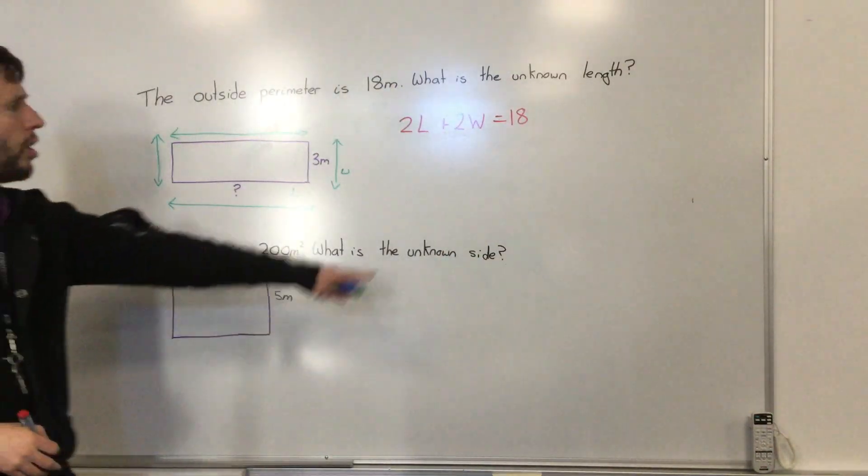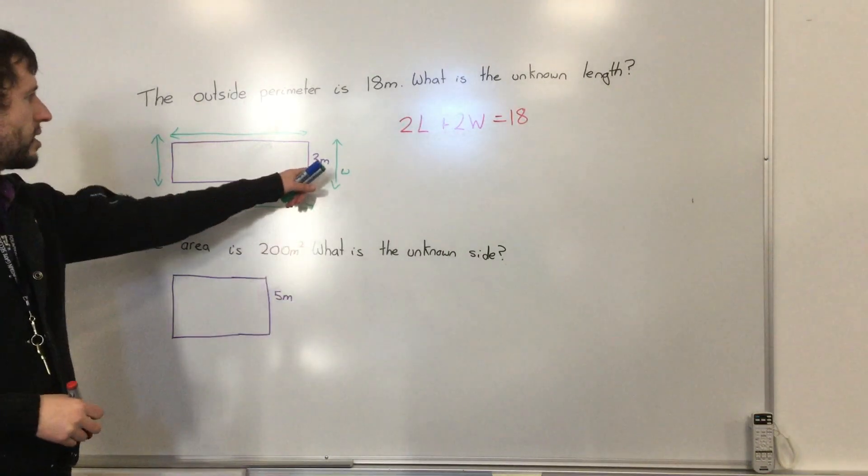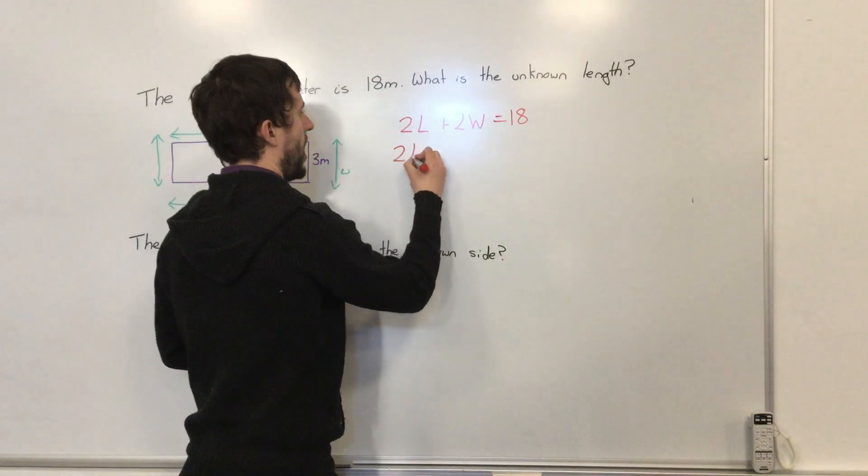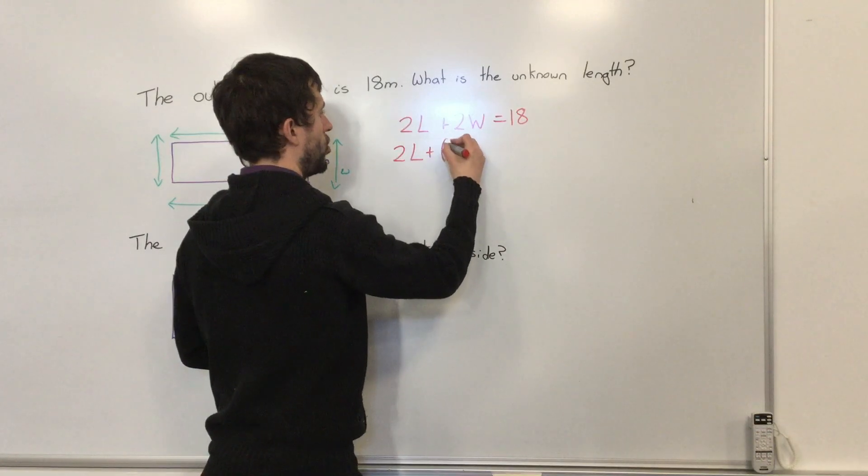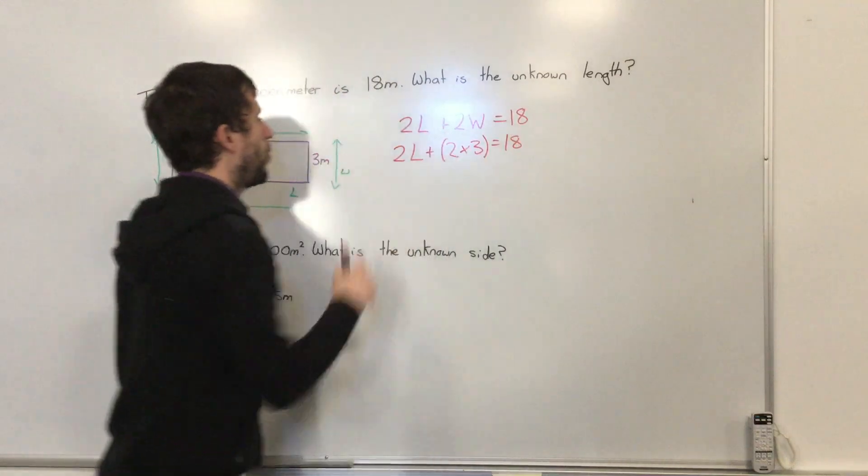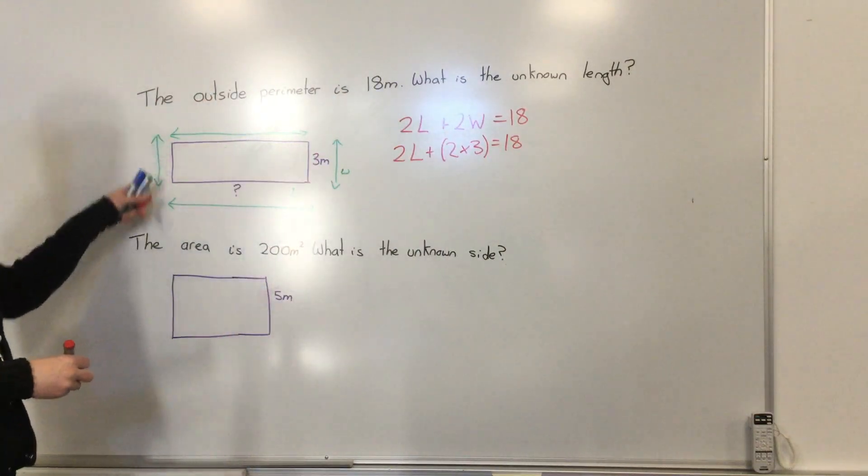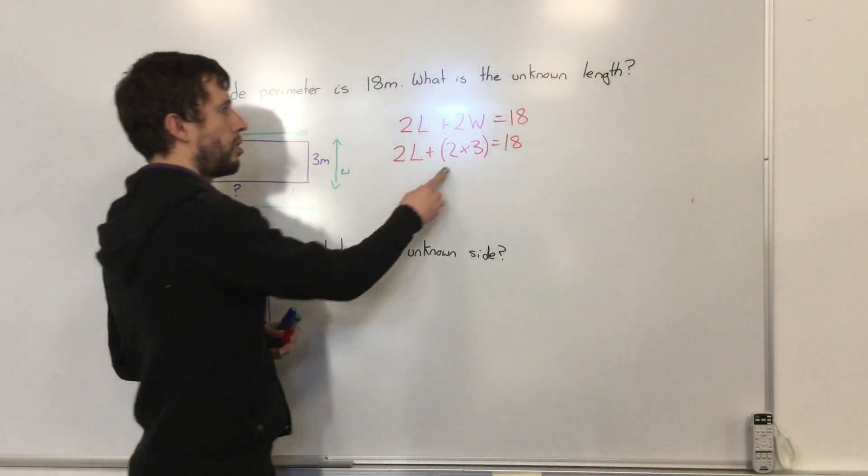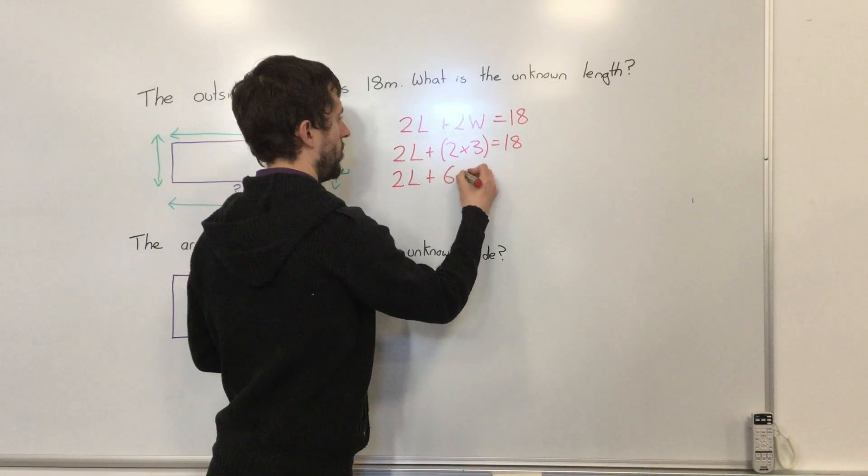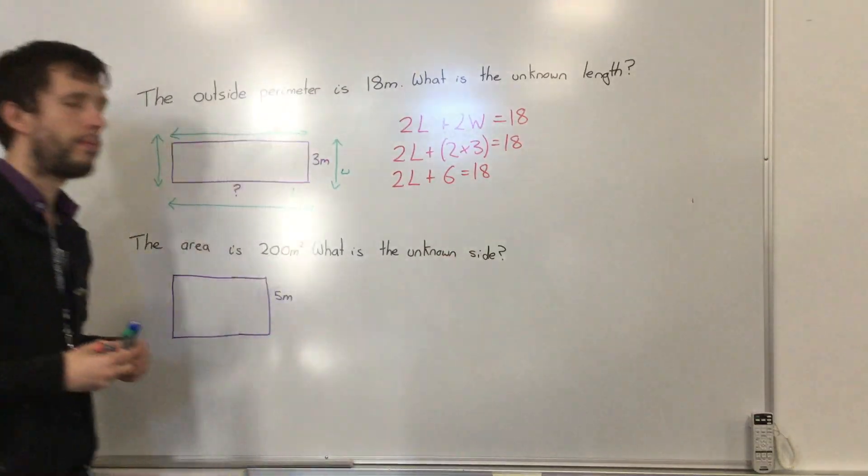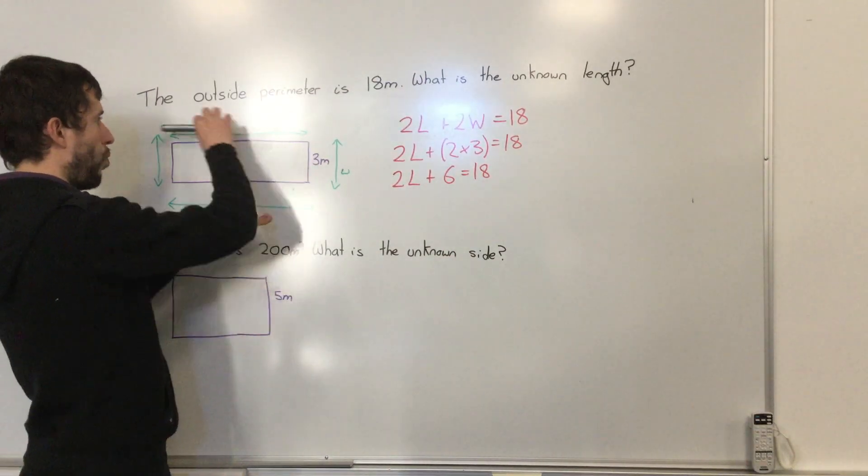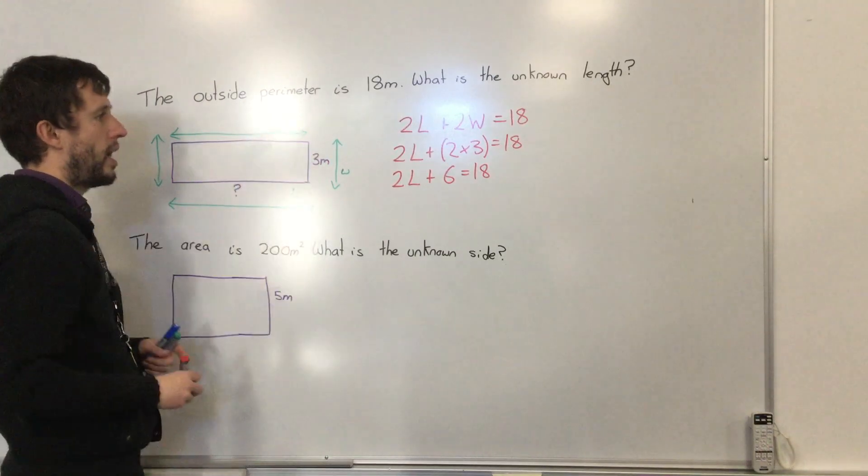We also know that our width is 3. So I can say that we've got 2 times 3 for our width. It's 3 plus 3. So 2 times 3 equals 6, and then I know I want to take this away and work out what the total of these two are.